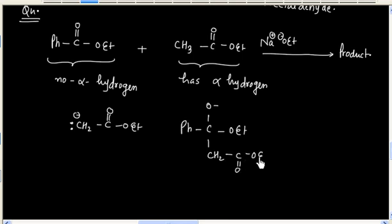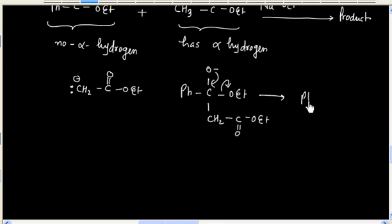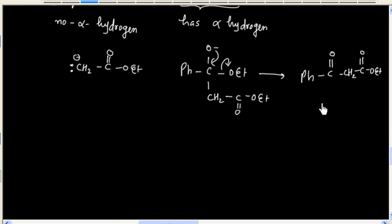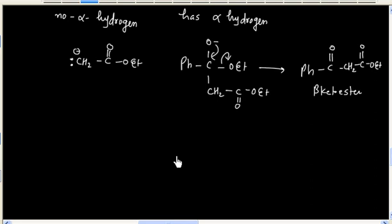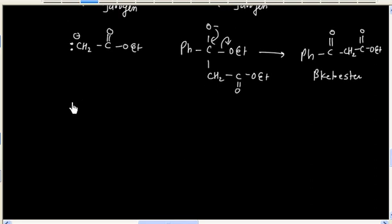And we will have this addition product. The next step is loss of leaving group, so we will have beta-keto ester. Since the medium is basic, we will have salt of beta-keto ester.